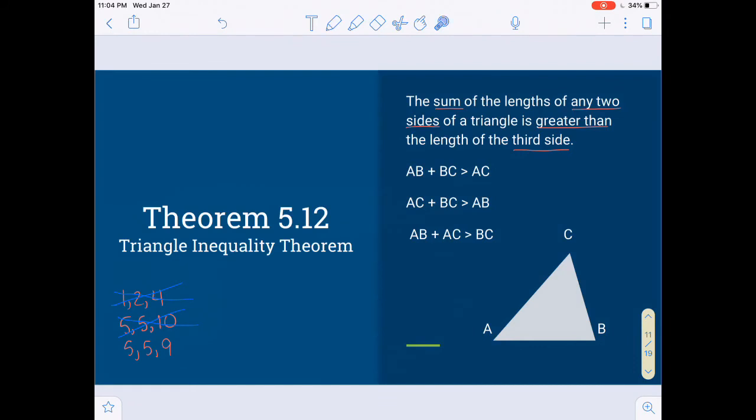But the third combo will. If you do 5 and 5, that's 10. It's bigger than 9. If you do 9 and 5, it's 14. That's bigger than 5. Same thing if you did this 5 and that 9, 14 bigger than the other 5. So that combo will make a triangle. If you had sticks that were 5 inches, 5 inches, and 9 inches, you'd have no trouble laying them out in the triangle.